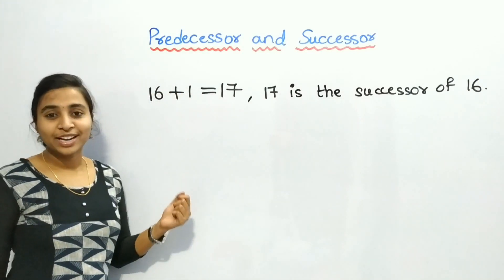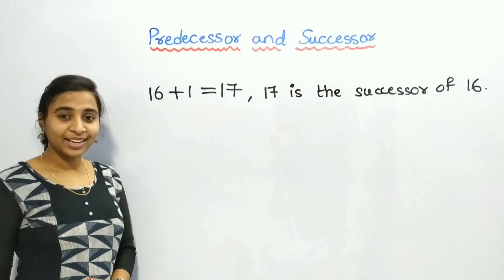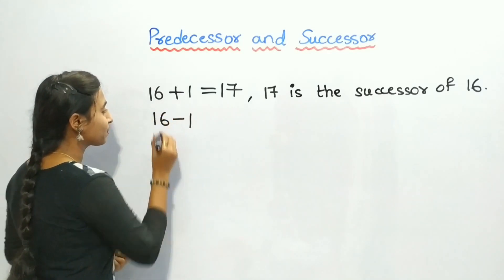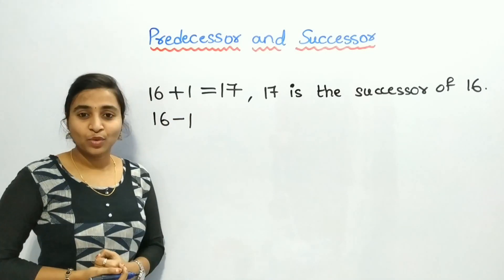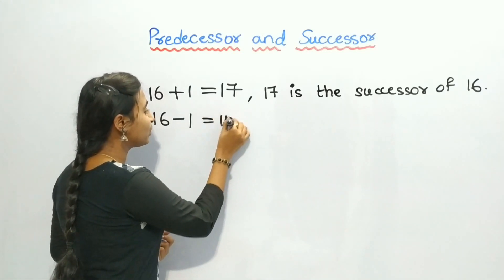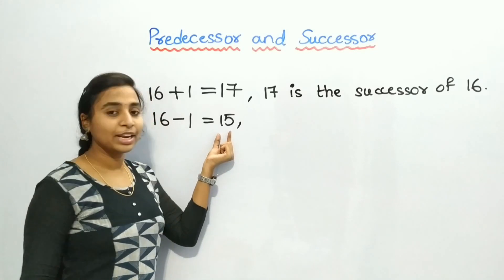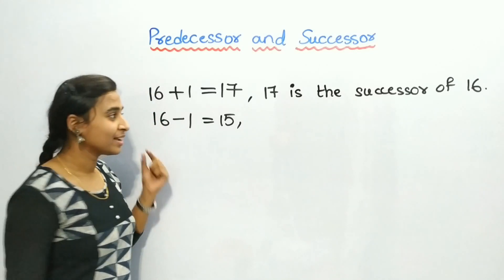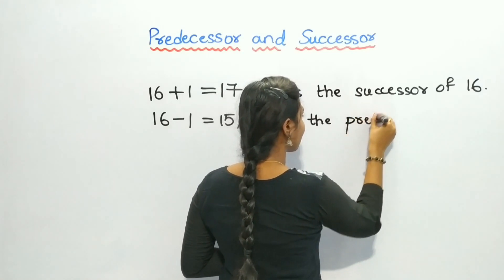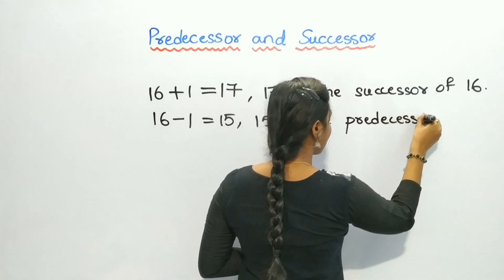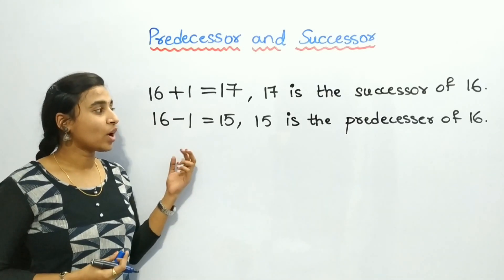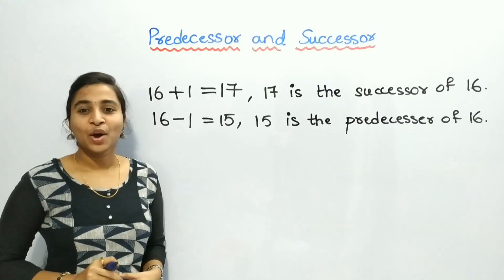Now I want the Predecessor of 16. To find the Predecessor, I should subtract 1. If I want Successor, I add 1; if I want Predecessor, I subtract 1. So, 16 minus 1 equals 15. Therefore, 15 is the Predecessor of 16. With these examples, I have shown what the Predecessor and Successor of numbers are.